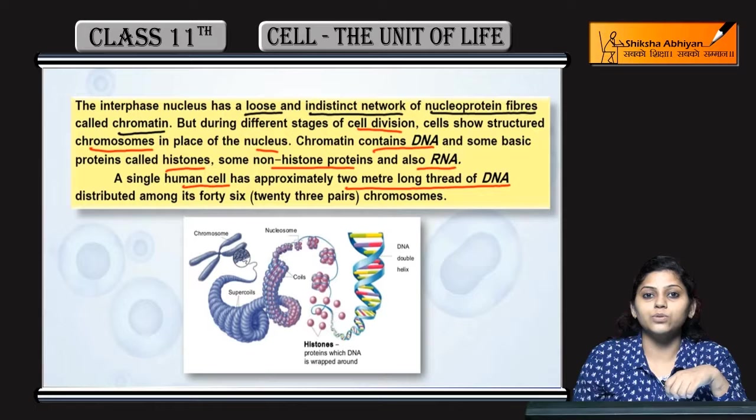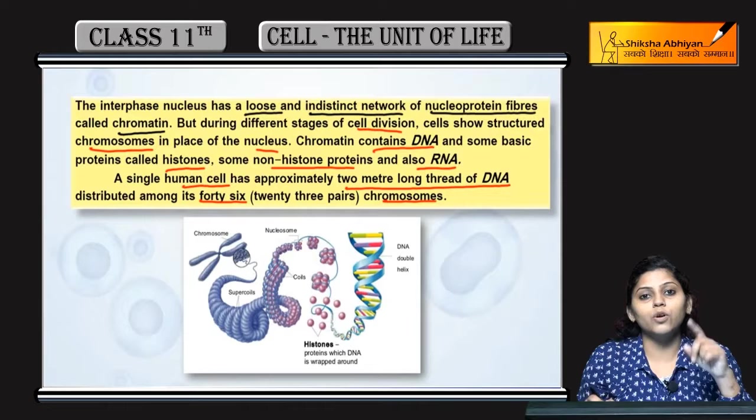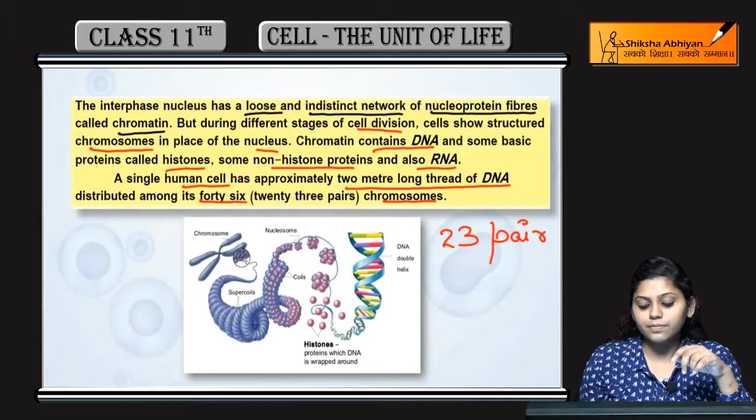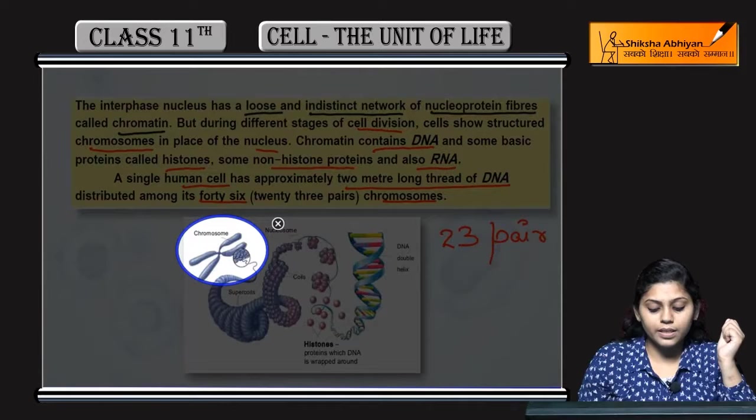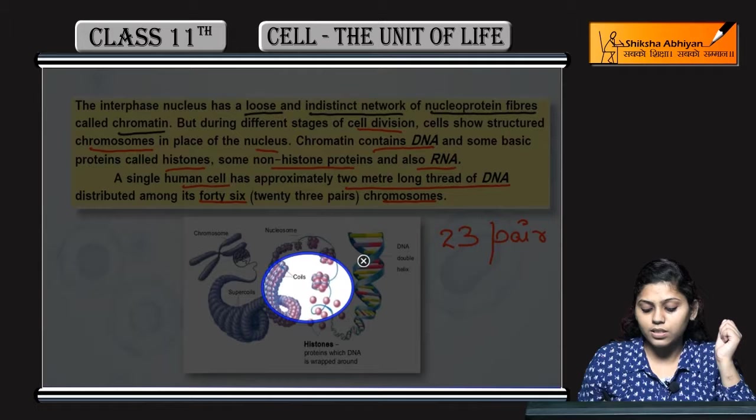Single human cell mein approximately two meter long thread of DNA hoti hai. Hamare body mein ek cell mein two meter long DNA hoti hai, distribute hoti hai among 46 chromosomes — 46 chromosomes means 23 ke pair mein present honge. Is structure mein hum dekh sakte hain chromosomes supercoil hue hain aur nucleosome bana hai.